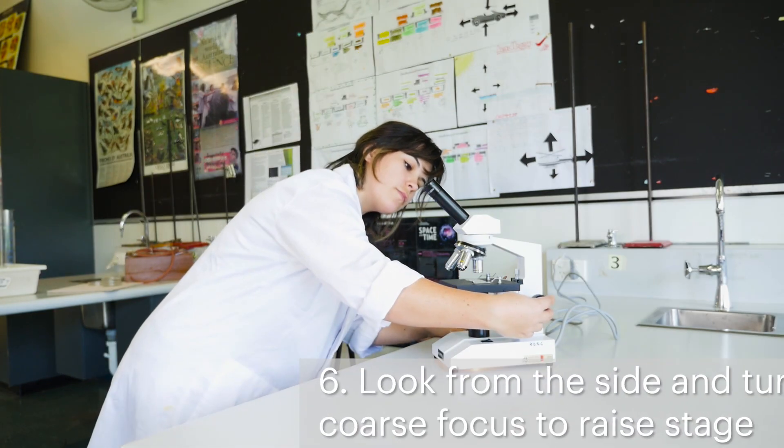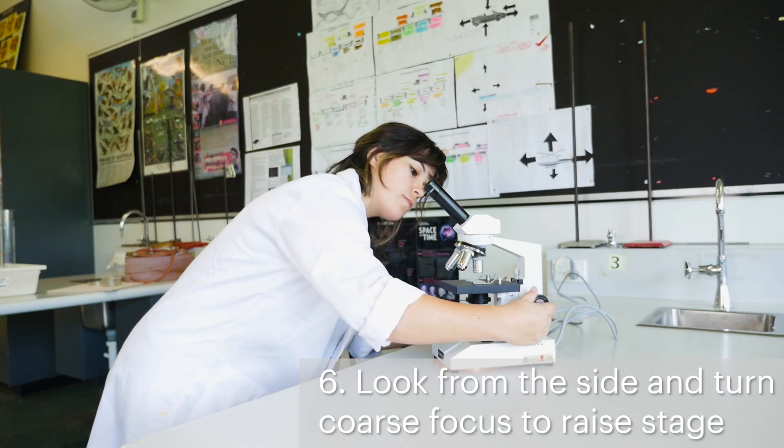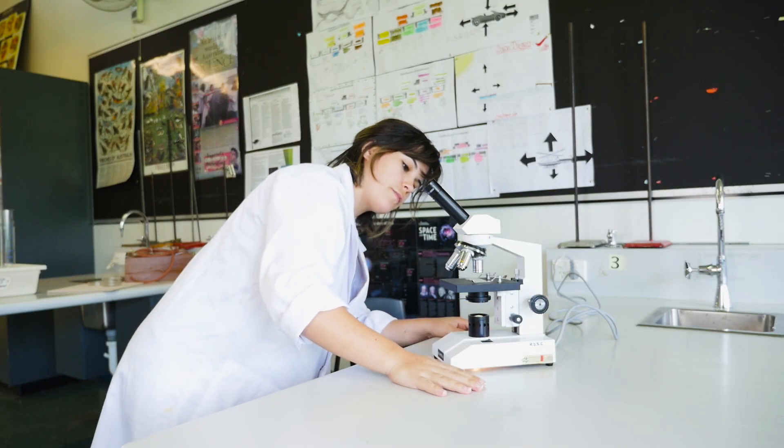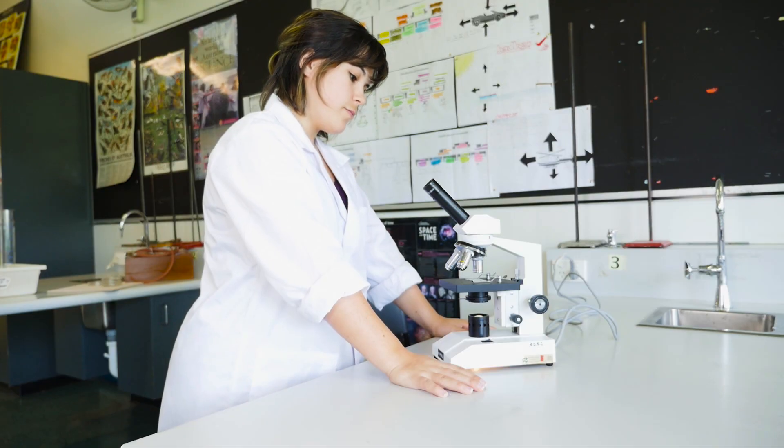Look from the side while you turn the larger coarse focus knob to move the stage up to its highest position, close to, but not touching, the objective lens. It's important to look from the side so you don't risk smashing the slide or the objective lens by going too far.